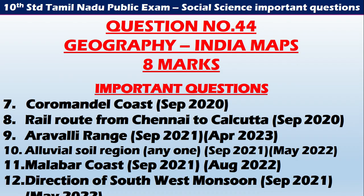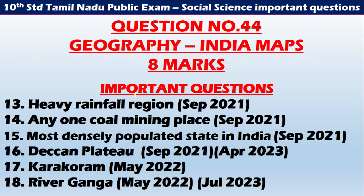Coromandel Coast — September 2020. Rail route from Chennai to Calcutta — September 2020. Aravalli Range — September 2021 and April 2023. Alluvial soil region — September 2021 and May 2022. Malabar Coast — September 2021 and August 2022. Direction of Southwest Monsoon — September 2021. All these are important one or two trend questions in the Geography India map.